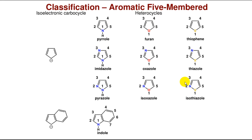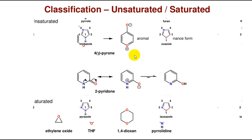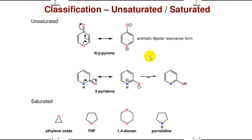Indane is an isoelectronic analogue to indole. Its chemical formula is N-indole. Heterocyclic compounds are also classified by saturation.